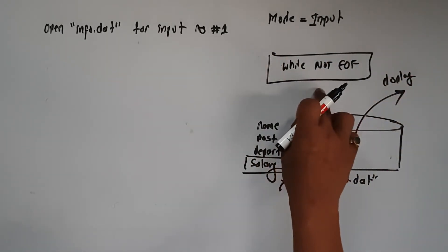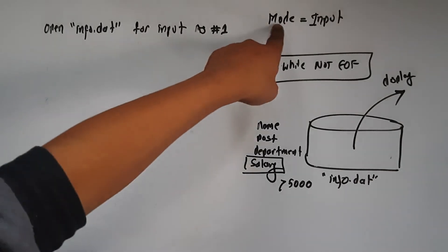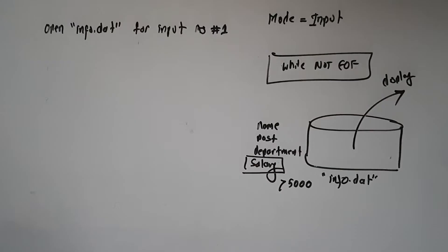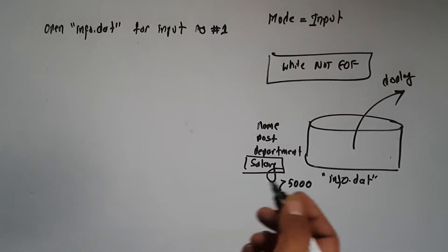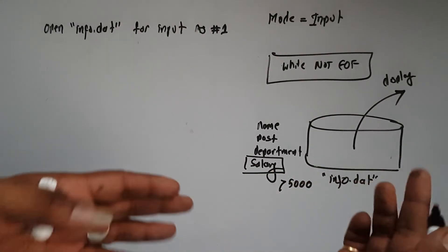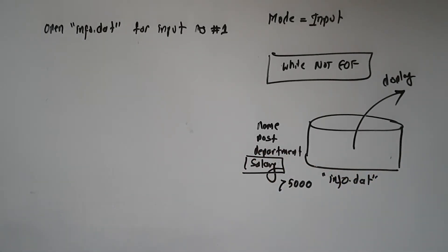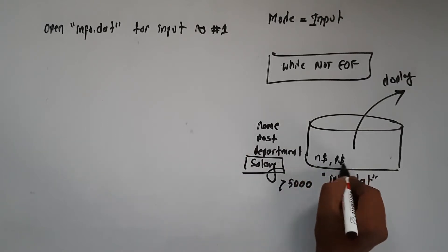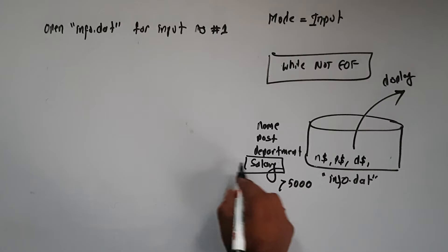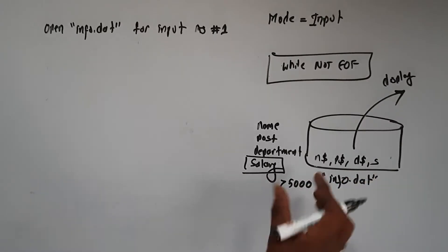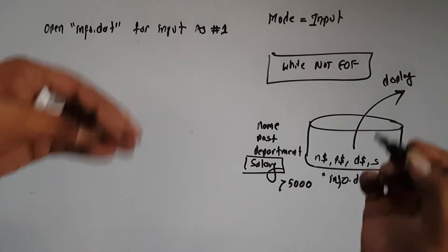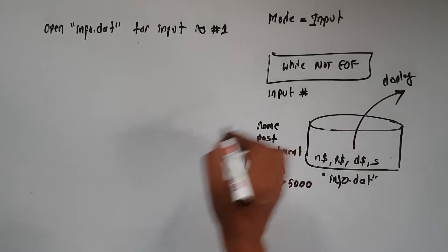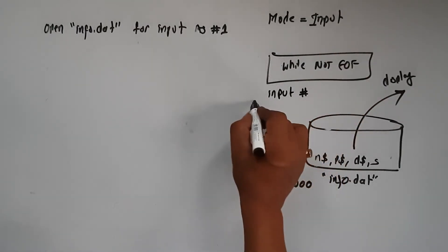I will write the input unit inside the loop. We need to read the information from the file. So, we write the variables: n$ for name, p$ for post, d$ for department, and s for salary. We need to use input hash — that is INPUT# — to read from the file.